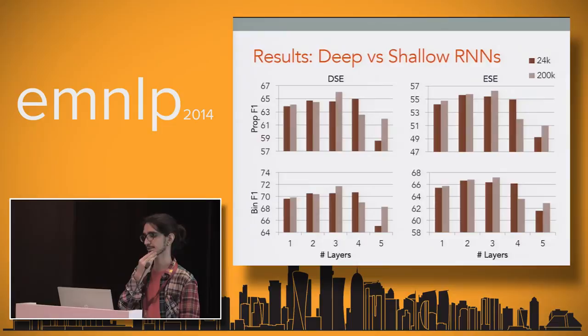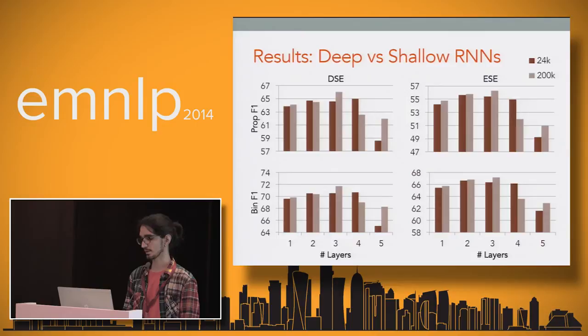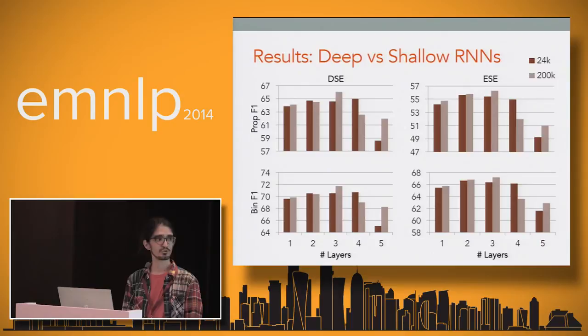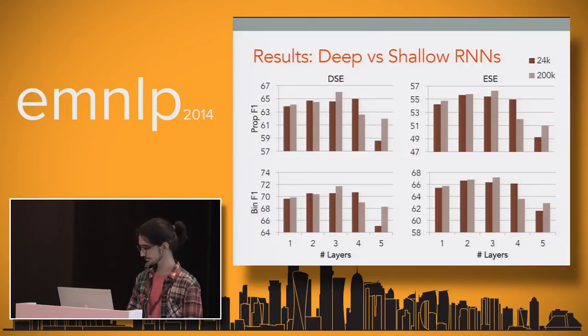The first result compares various deep and shallow RNNs of various sizes and depths. In both DSE and ESE extraction, the three-layer RNN with the larger size performs the best, and the difference between the three-layer RNN and the shallow one-layer RNN is significant. There is a general trend of increasing performance as depth increases, until a certain depth after which performance starts to decrease.